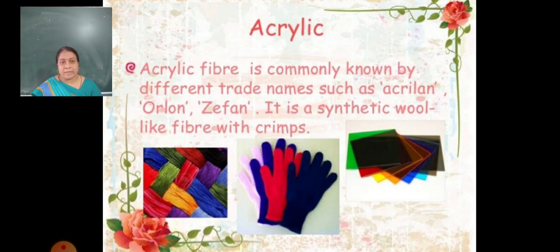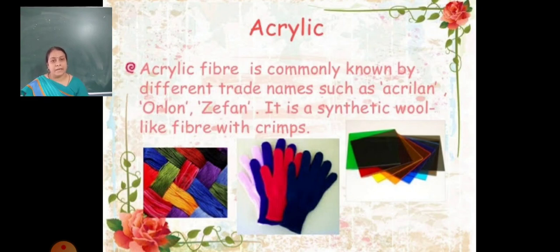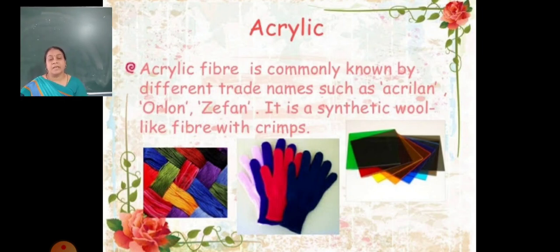So synthetic fibers are formed by the process of polymerization, in which small units called monomers combine to make a polymer. There are four types of synthetic fibers: rayon, nylon, polyester, and acrylic. I hope you understood about synthetic fibers — fibers which are man-made using chemical compounds. Rayon is a semi-synthetic fiber because it also uses a natural fiber, cellulose. Thank you.